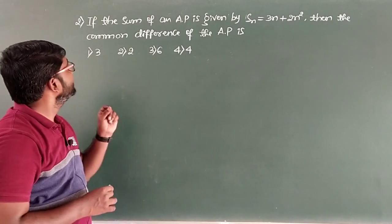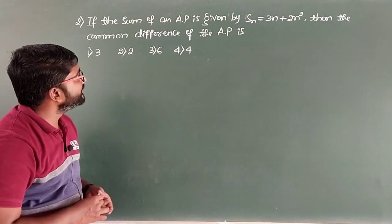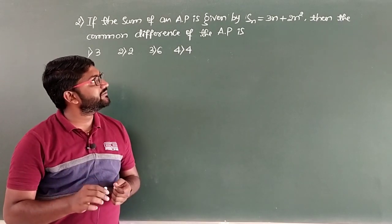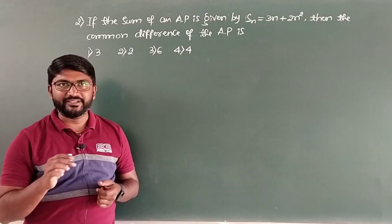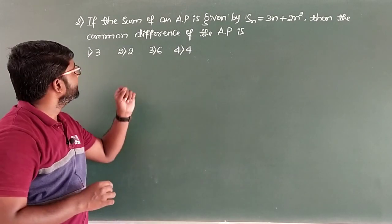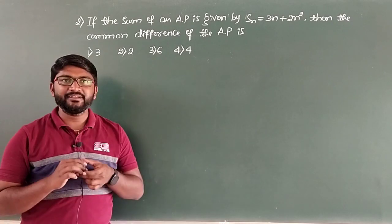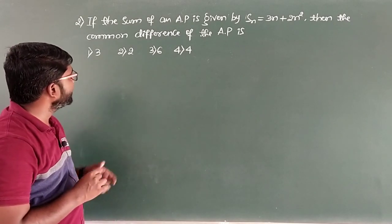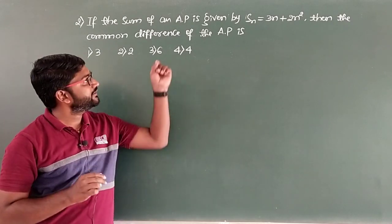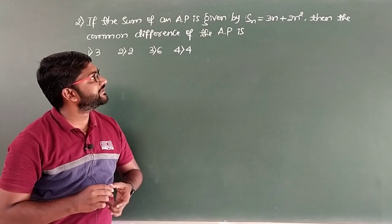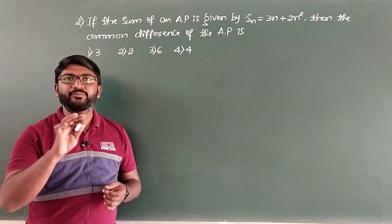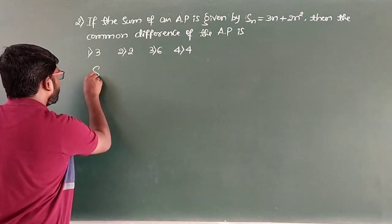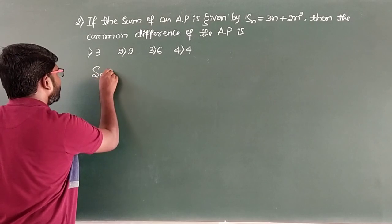The next question: if the sum of an AP is given by SN = 3N + 2N², then the common difference of the AP is — and the four options are 3, 2, 6, and 4. We will consider SN and put N = 1 to get A1, the first term of the AP.